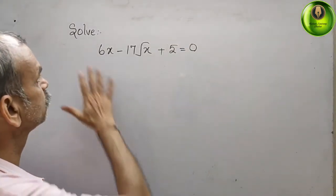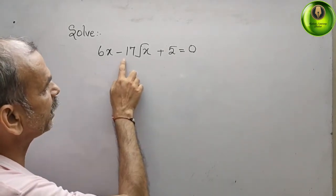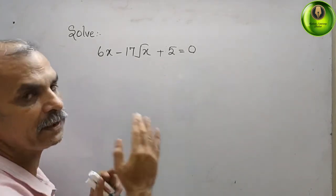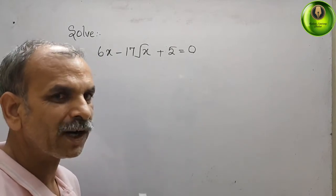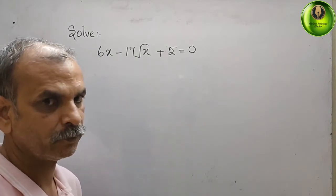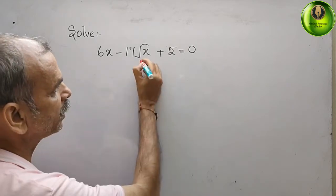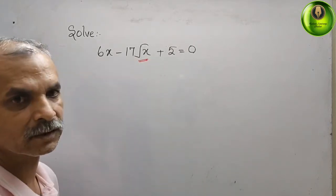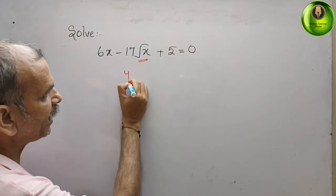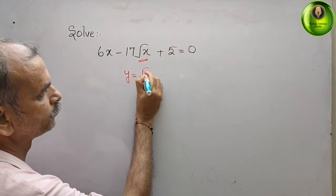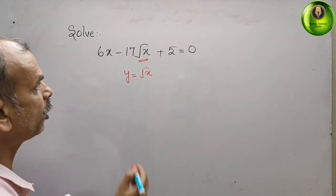The question is to solve 6x minus 17 root x plus 5 equals 0. Here we will use a reducing method to reduce our root x. We will take y is equal to root x, and form a new equation.